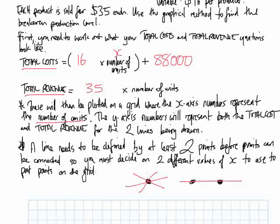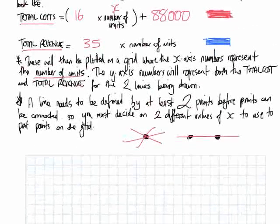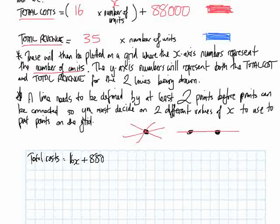We're going to represent total costs with a red line, because costs are bad, and the total revenue line is going to be blue, because selling things is good. So: Total costs = 16x + 88,000 (red), and Total revenue = 35x (blue).